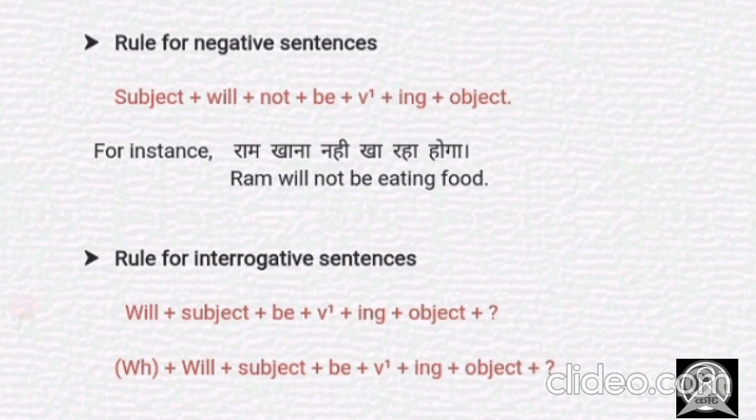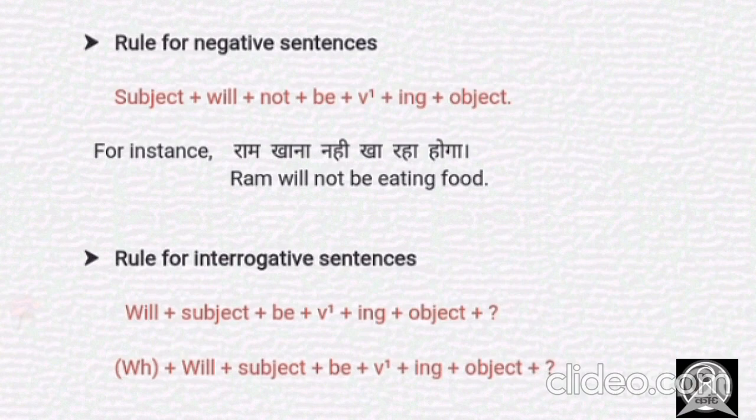Now it's time for the negative part. We have to do: subject plus 'will not be' plus verb's first form plus 'ing' plus object. For instance, taking the same example — 'Ram khana nahi kha raha hoga' — Ram will not be eating food.